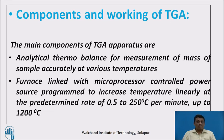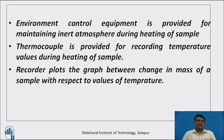The main components of a TGA apparatus are: an analytical thermobalance for accurately measuring the mass of the sample at various temperatures; a furnace linked with a microprocessor-controlled power source programmed to increase temperature linearly at a predetermined rate of 0.5 to 250 degrees centigrade per minute, up to 1200 degrees centigrade; environment control equipment for maintaining an inert atmosphere; a thermocouple for recording temperature values; and a recorder that plots the graph between change in mass and temperature.